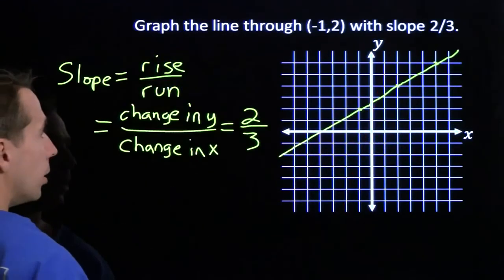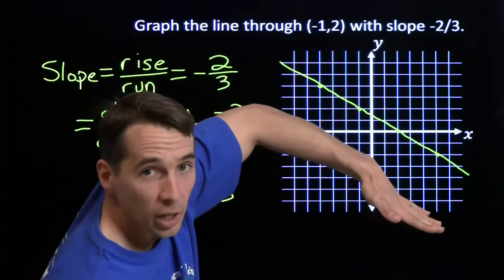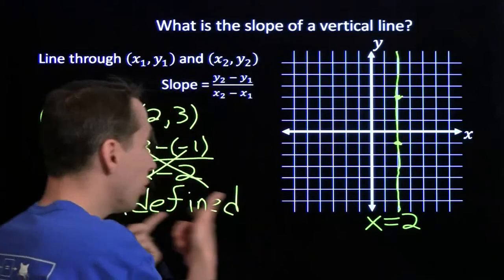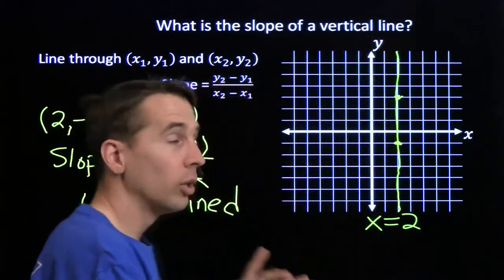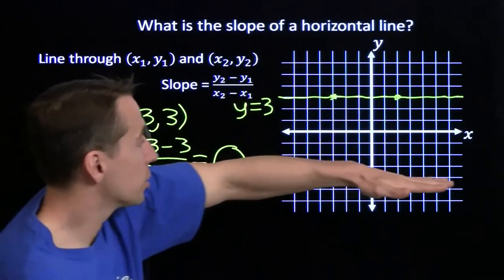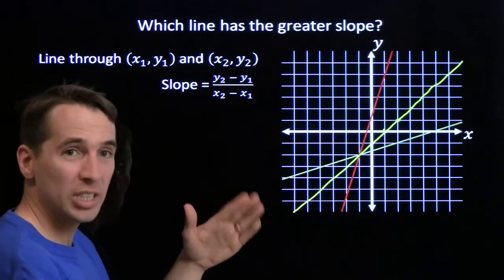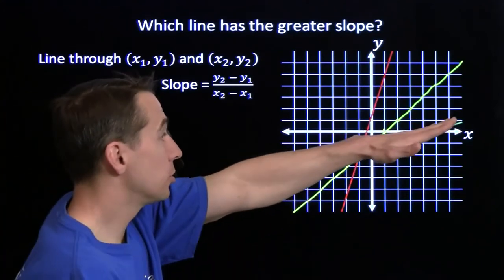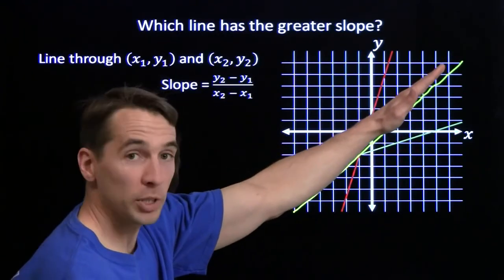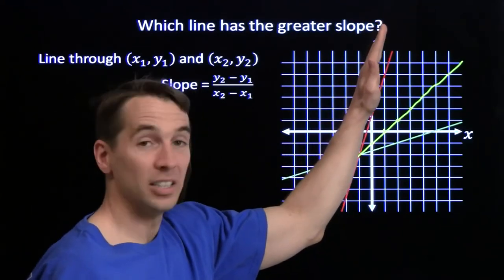Quick recap: positive slope means the line slopes upward; negative slope means the line slopes downward; a vertical line has undefined slope — we don't say it's 0, because slope 0 belongs to a horizontal line. Finally, we can use the slope to figure out how steep the line is: if the slope is close to 0, the line is nearly flat; if the slope is 1, it's going up just as fast as it's going over; and if the slope is very large, the line is very steep.